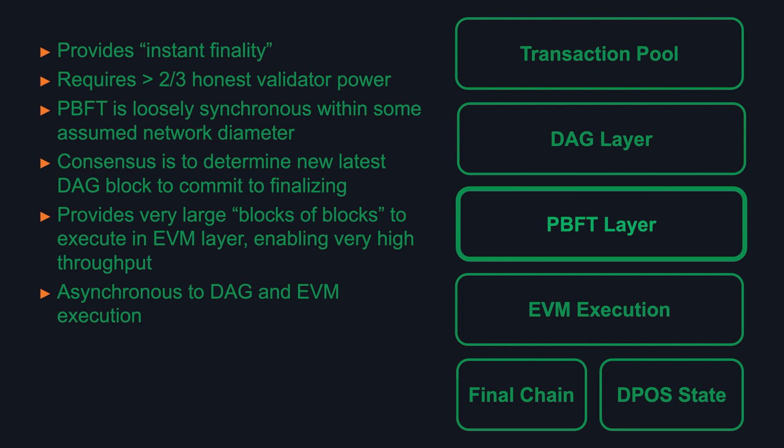The PBFT layer is what provides instant finality, meaning deterministically it won't ever be reordered. It does require two-thirds honest validator power, and we assume that PBFT is loosely synchronous within some network diameter, because what consensus is being achieved on is just a DAG block hash — not a block of transactions. The block size, or value being voted on, is very small, so the network diameter can be assumed to be quite small. The PBFT layer therefore provides very large blocks of blocks. Having agreed upon a set of DAG blocks to execute, we can send all those blocks as a single large block of transactions to the EVM, and that's what enables the very high throughput.